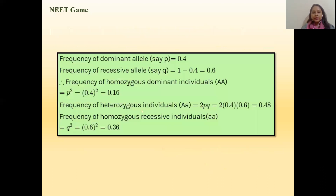For better understanding: the frequency of the dominant allele is 0.4, and the frequency of the recessive allele is 0.6. Frequency of homozygous dominant individuals is p², homozygous recessive is q², and heterozygous is 2pq. This question is important because it covers different types of sub-questions — you can be directly asked the frequency of homozygous dominant, heterozygous, or homozygous recessive individuals.